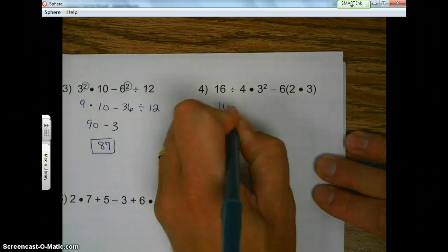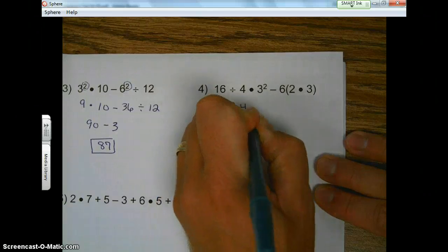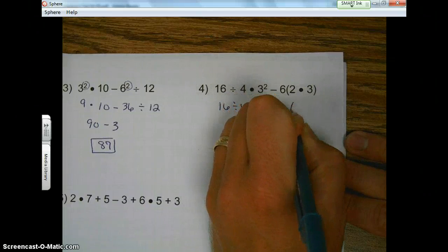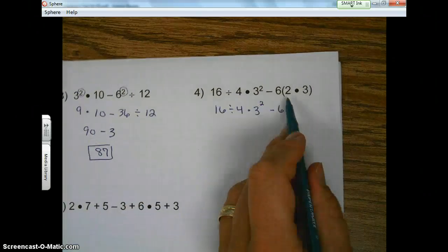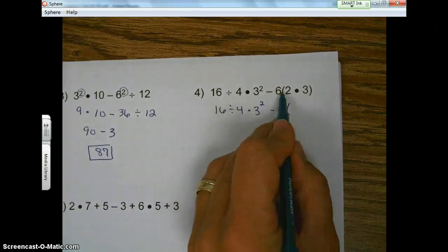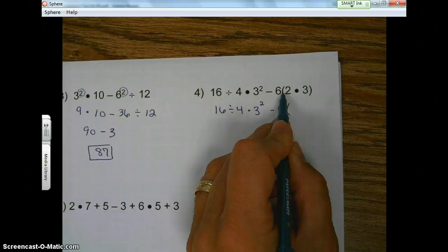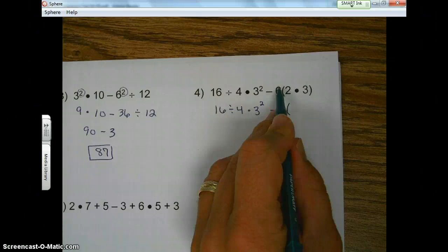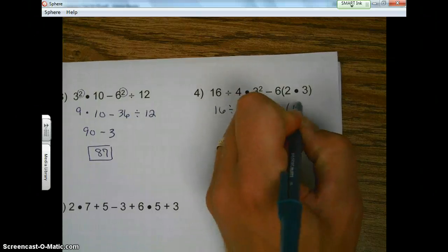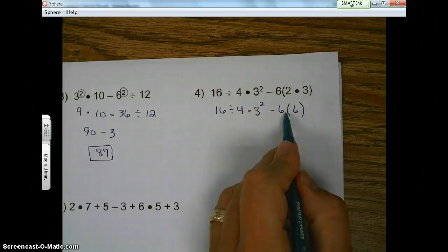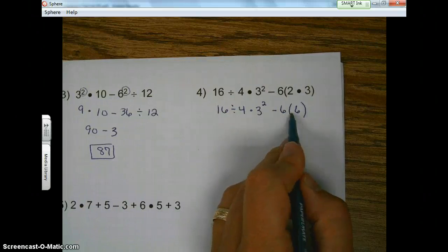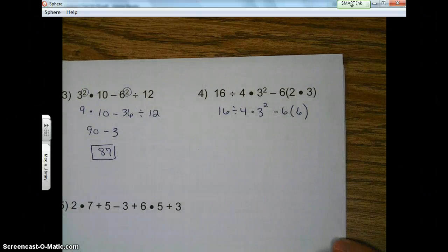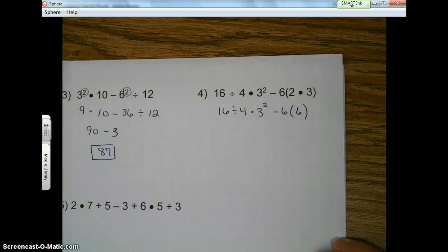Okay? We got to leave the parentheses here, because remember, anytime you have a number next to a parentheses, it means multiplication. That's right. So we don't want to get rid of that. So 2 times 3 is 6. This means multiplication. We have to leave it in parentheses. Or use a dot. Okay? There's different ways to show multiplication.